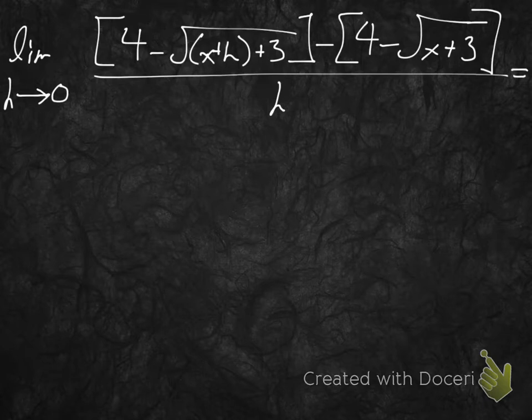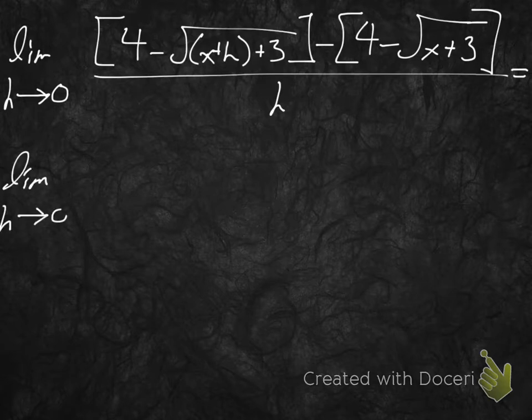We're just going to do some algebraic simplification now that we've plugged in correctly to the limit definition. It may seem unnecessary to write the limit as h approaches 0 every single time, but it's not true if I don't write it. The derivative is not just this rational — it's the limit as h approaches 0 of this rational.